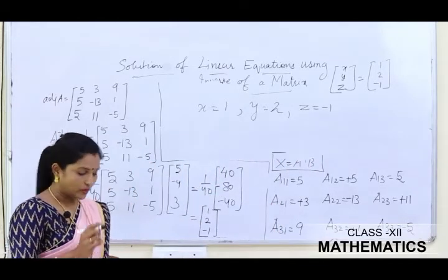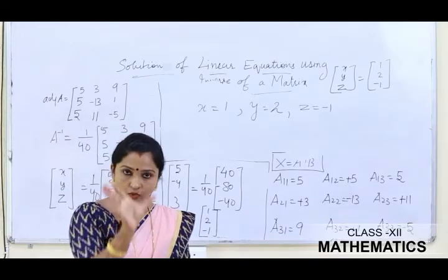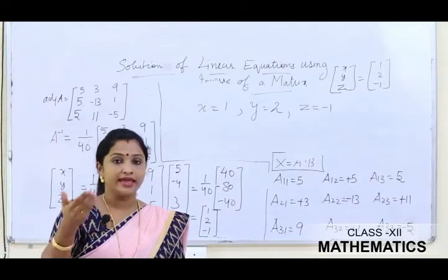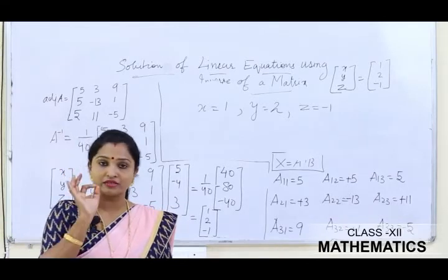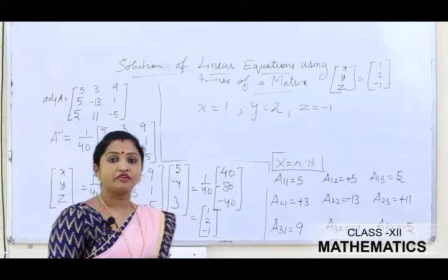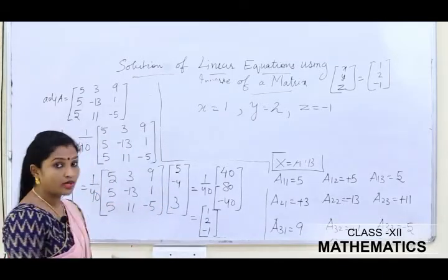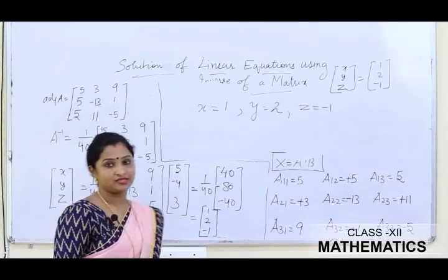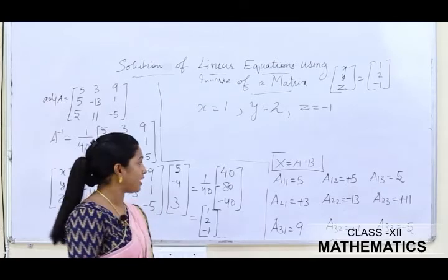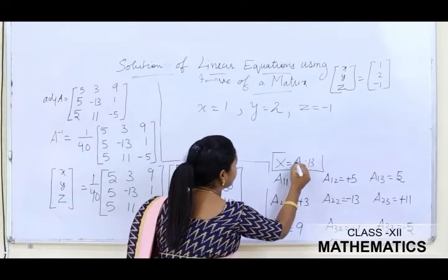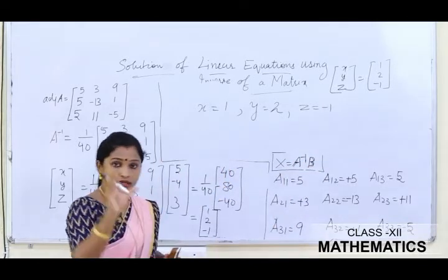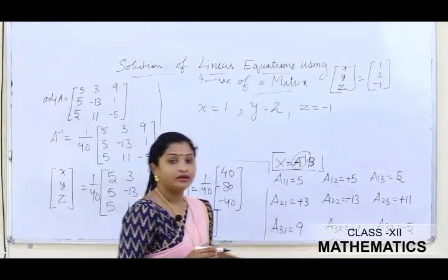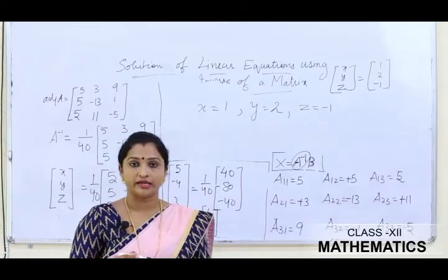To summarize the procedure: first identify A (coefficient matrix), X (variable matrix), and B (constant matrix). Then find det(A) — if non-singular, A inverse exists. Write X = A⁻¹B, find the cofactors, take the transpose to get adj(A), and compute A⁻¹ = (1/det(A)) × adj(A). Multiply A⁻¹ by B to get the values of x, y, z.